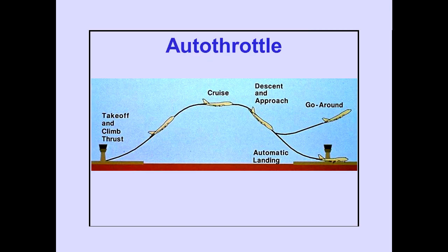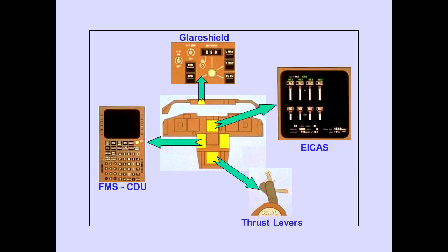The autothrottle is a full-time system which can be operated from the start of the take-off roll through an automatic landing or go-around. Autothrottle controls and indicators are located on the glare shield, FMS-CDU, ICAS, and thrust levers.